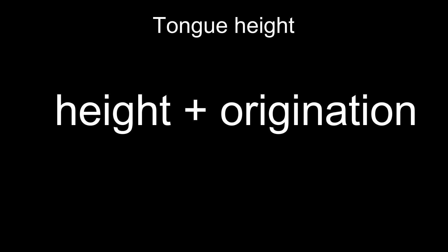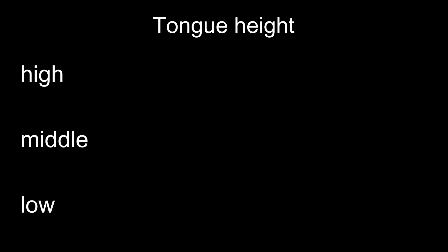The way we move and shape our tongue plays a big part in giving each vowel its own sound. When we pronounce a vowel, even a small change in the position of the tongue can make a difference in the way the vowel sounds. The height of the tongue means how high the tongue is placed in the mouth. The vertical position of the tongue can be high, middle, or low.